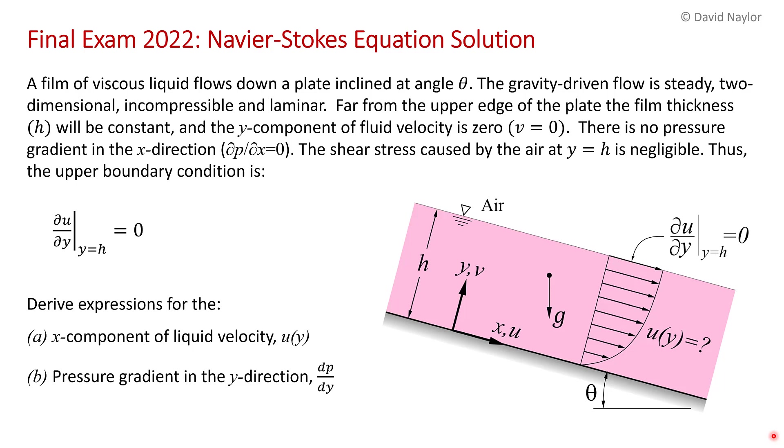It states, a film of viscous liquid flows down a plate inclined at angle theta. The gravity-driven flow is steady, two-dimensional, incompressible, and laminar. Far from the upper edge of the plate, the film thickness h will be constant, and the y component of fluid velocity is zero (v = 0). There is no pressure gradient in the x direction (∂p/∂x = 0). The shear stress caused by the air at y = h is negligible. Thus, the upper boundary condition is ∂u/∂y at y = h equals zero.